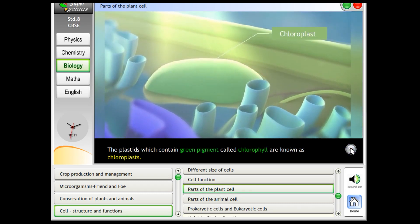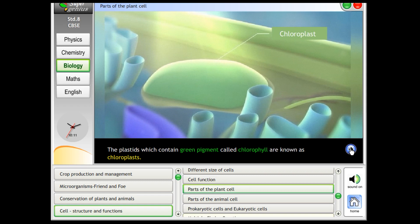The plastids which contain green pigment called chlorophyll are known as chloroplasts.